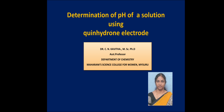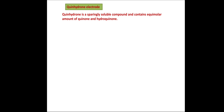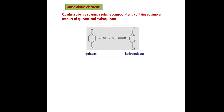In this video, let us see the determination of pH of a solution using the quinhydrone electrode. Quinhydrone is a sparingly soluble compound. It contains an equimolar amount of quinone and hydroquinone. Quinone in acid medium undergoes reduction to form hydroquinone, and thus a redox reaction is set up between quinone and hydroquinone.